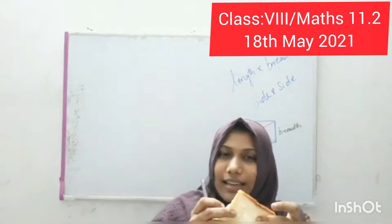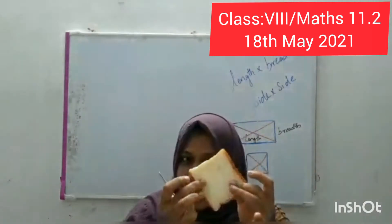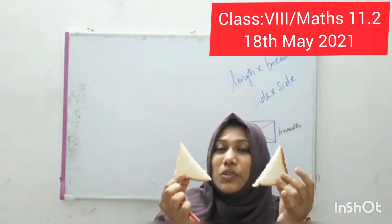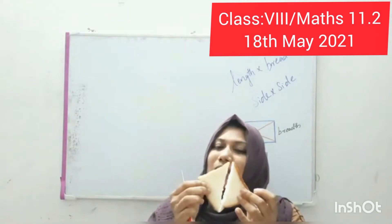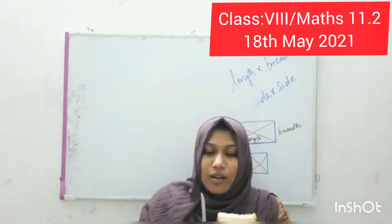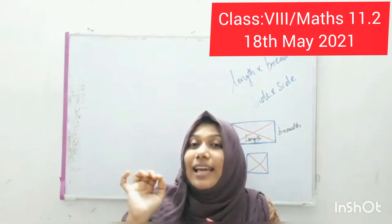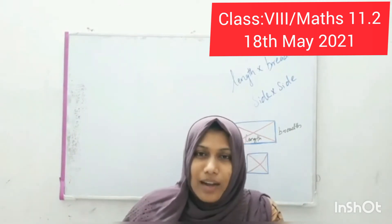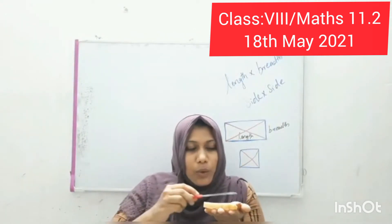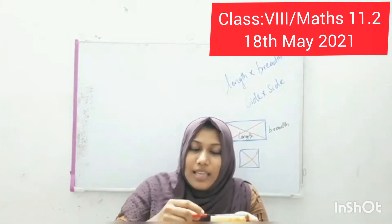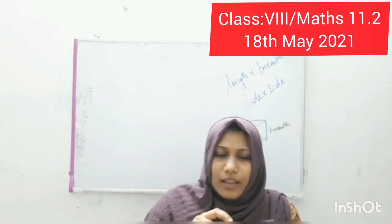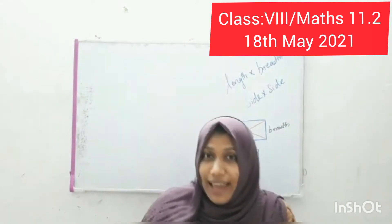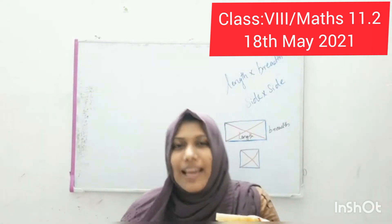I took a square bread piece and I cut through the diagonal, so I get two triangular pieces. We should spread cheese or mayonnaise throughout this surface. Throughout this surface — this portion is known as the area. The total bread slice is the area of the square, and this one is the area of the triangle.